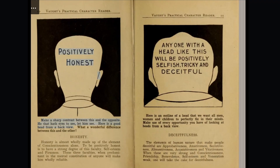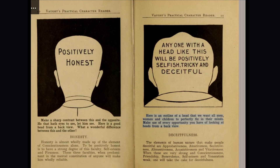Positively honest. Make a sharp contrast between this and the opposite. He that hath eyes to see, let him see. Here is a good head from a back view. What a wonderful difference between this and the other. Honesty is almost wholly made up of the element of conscientiousness alone. To be positively honest is to have a strong degree of this faculty, self-esteem, and firmness. These three faculties, when predominant in the mental constitution of anyone, will make him wholly reliable. Here is an outline of a head that we want all men, women, and children to perfectly fix in their minds. Make use of every opportunity you have of looking at heads from a back view.